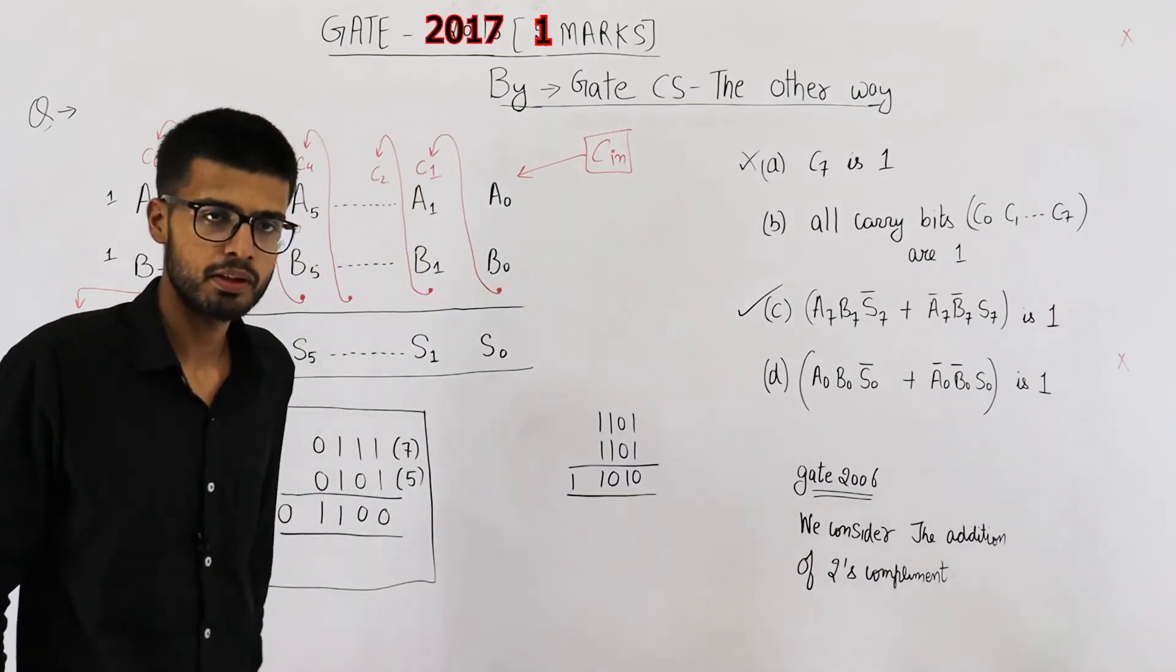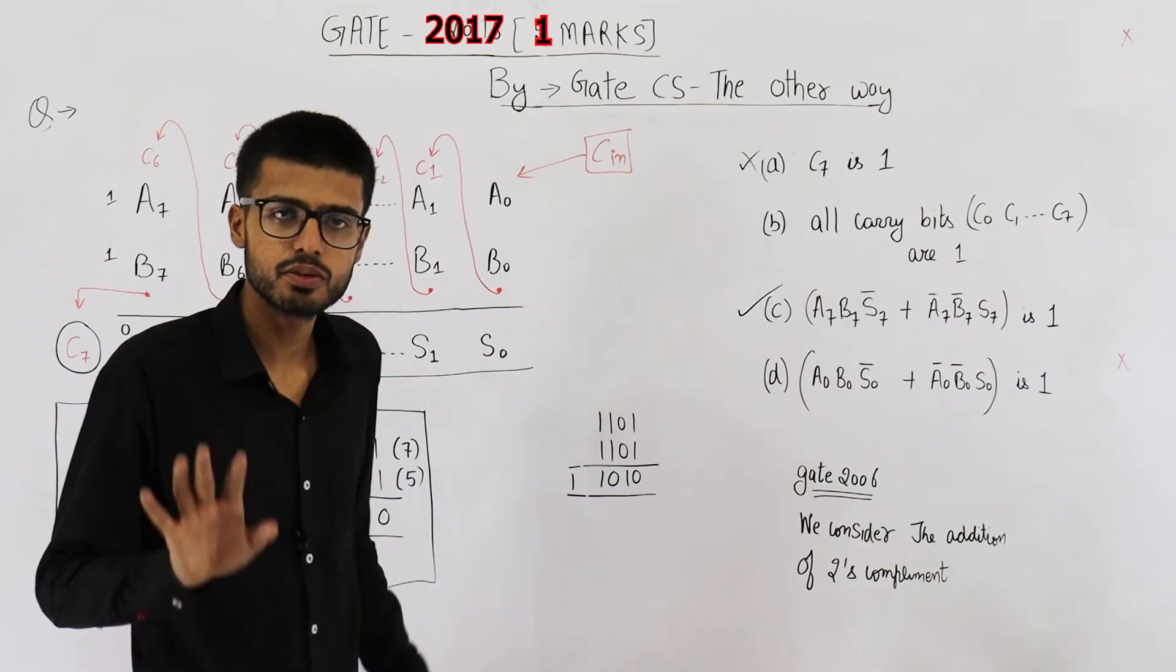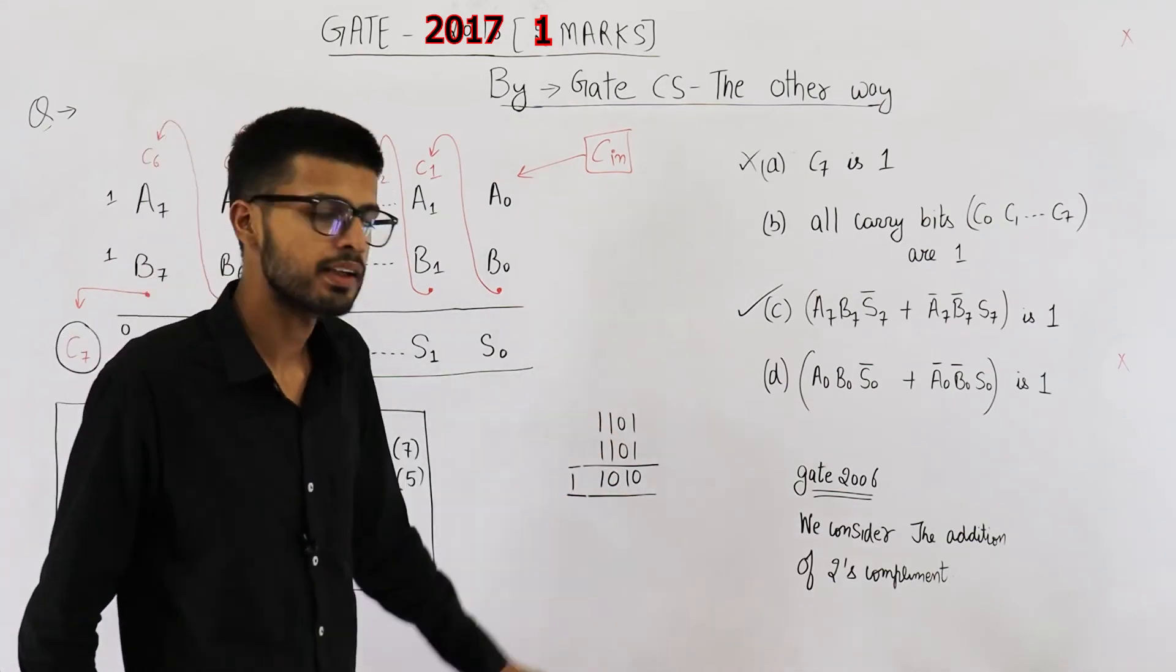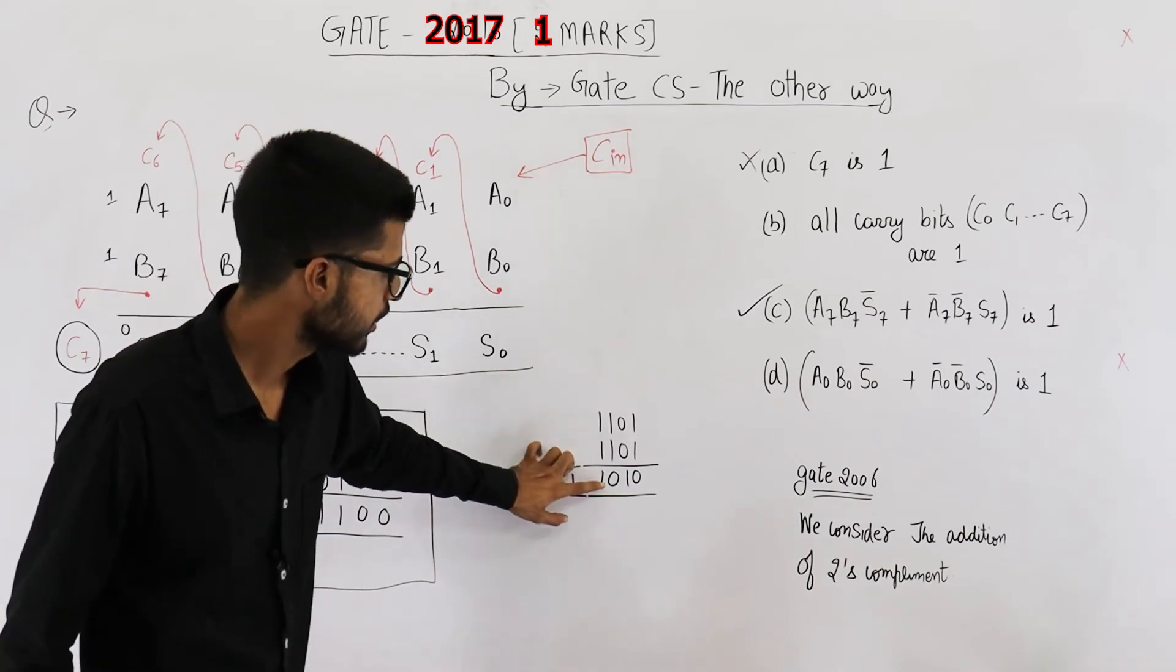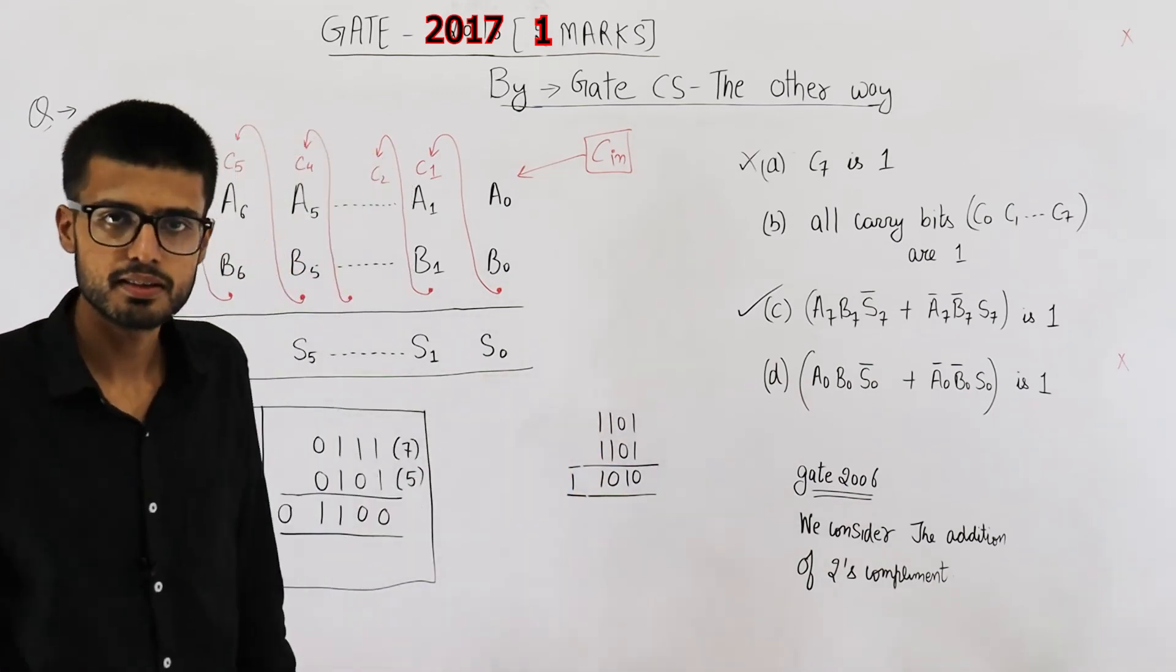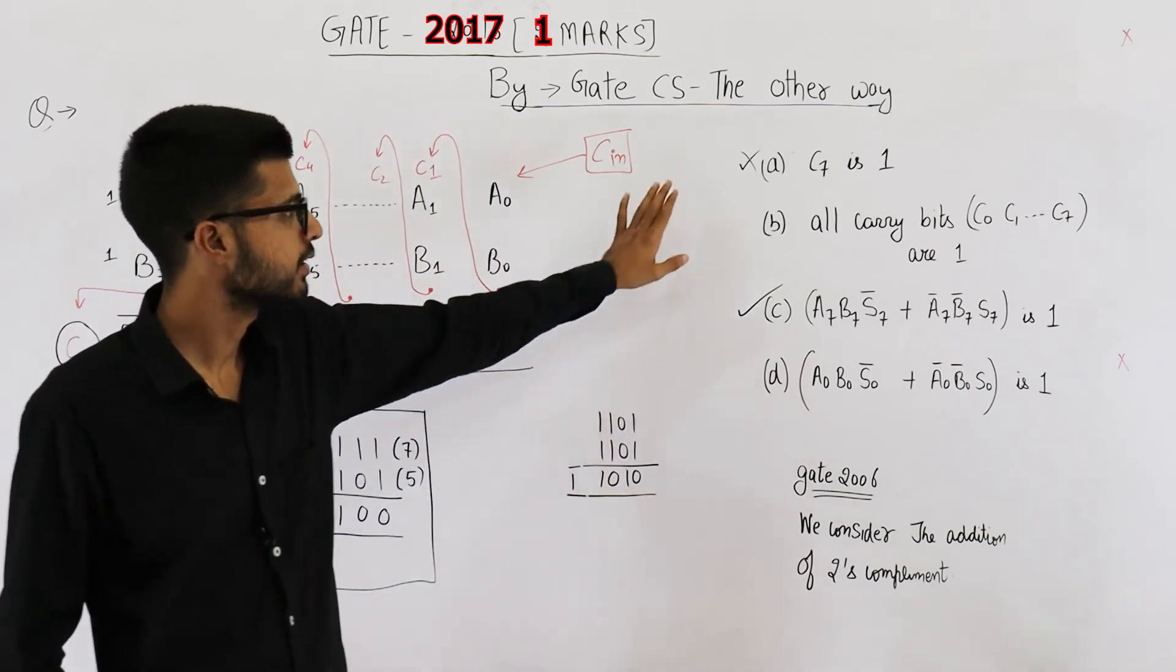And I have one more example. In this case, the final carry is 1. That means you have a carryout of this entire addition, but still there is no overflow. See, negative and negative give you negative. So this is valid. There is no overflow. The answer is 4 bits only. So option A is incorrect.